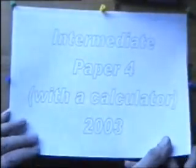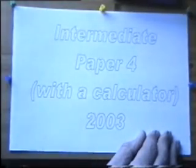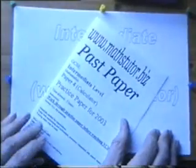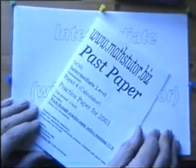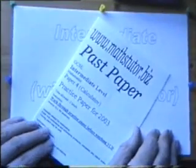This time we are going to look at intermediate paper 4 with a calculator. My version of the 2003 exam. Here is the paper that goes with the VCD and as always I hope you have worked it through first.